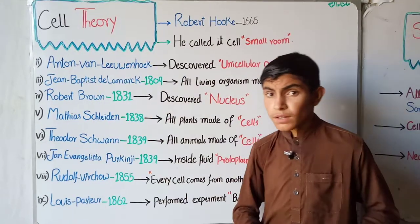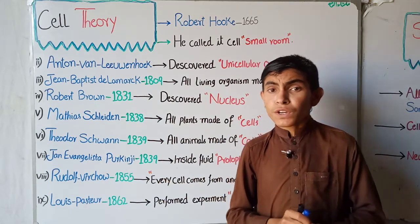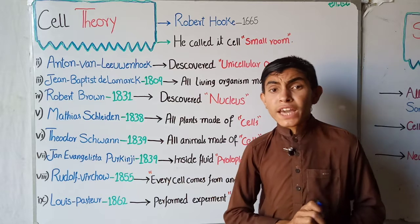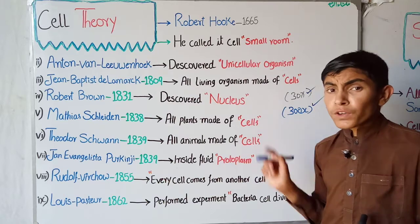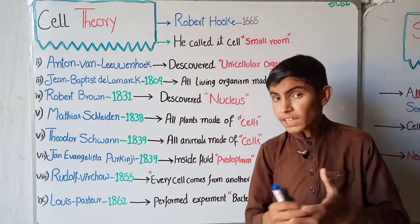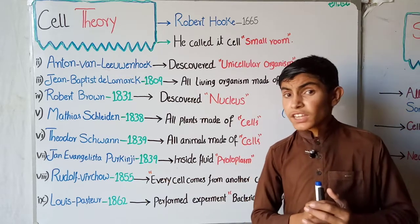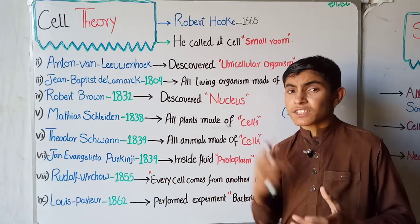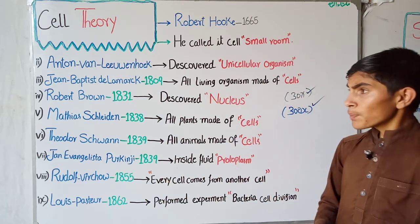Around the same time, another scientist came — Anton van Leeuwenhoek. Leeuwenhoek is considered the main discoverer of the modern microscope. His microscope had a magnification of 300 times. Under his microscope he magnified pond water 300 times and saw smaller microscopic organisms floating in the pond water. These organisms were made of only one cell with no division into other cells within them, and therefore he called these unicellular organisms.